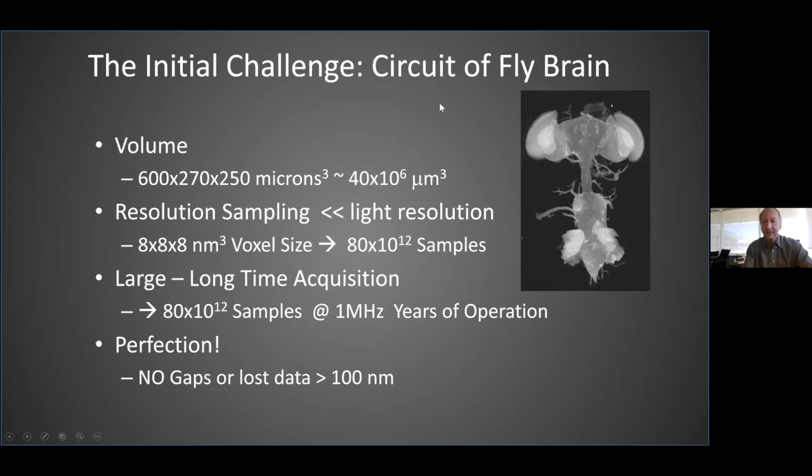An initial challenge on joining Janelia was to see if one can basically image neural circuitry, and the fly brain was one little example. A lot of the initial effort back then was trying to understand what are the technical requirements for doing that, and electron microscopy was the way to go.